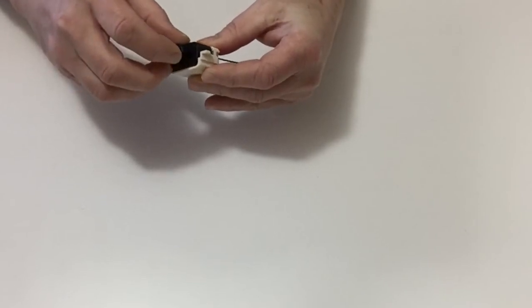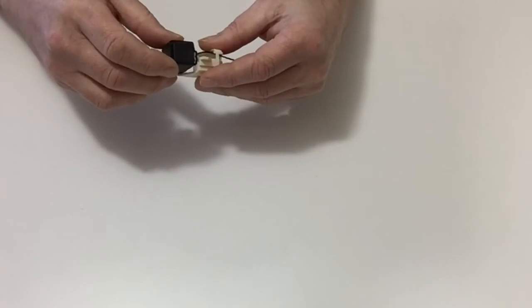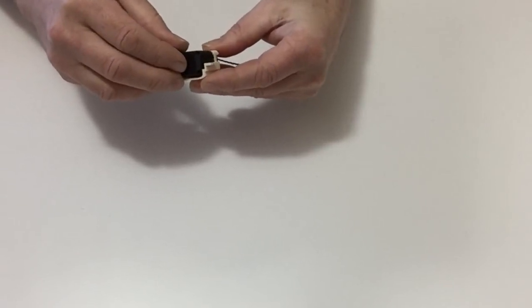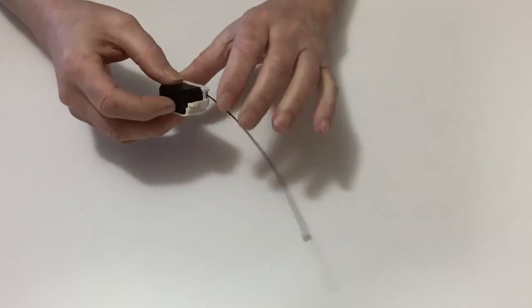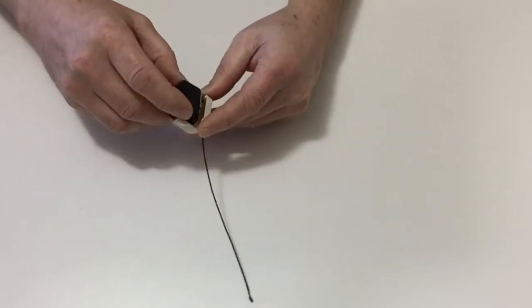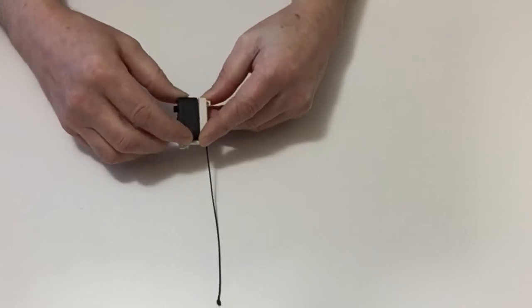Once we've done that, turn that around. Take the four screws that were holding the back plate on and then carefully screw those down into position.